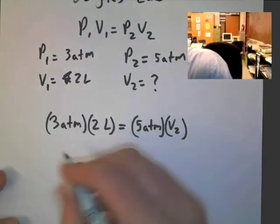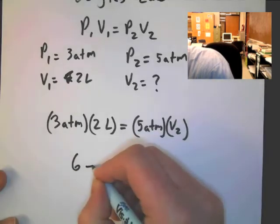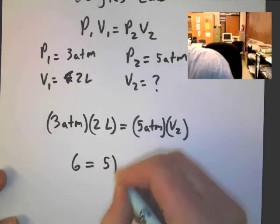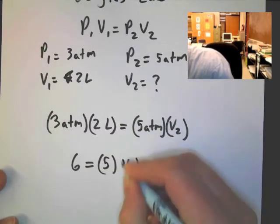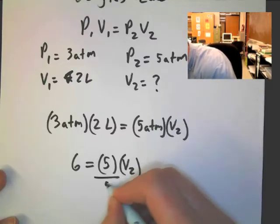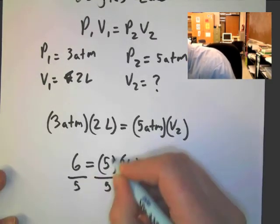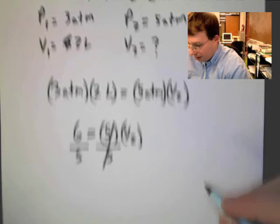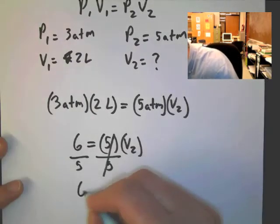Let's do this. 3 times 2 is equal to what? 6. That's equal to 5 times V2. And this is just a math problem now. So you divide by 5. Divide by 5. Those cancel out.